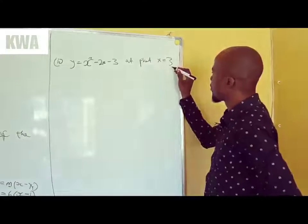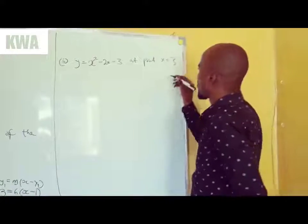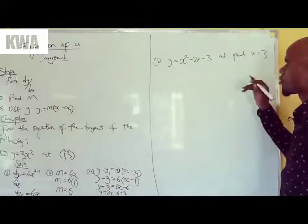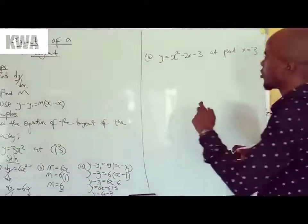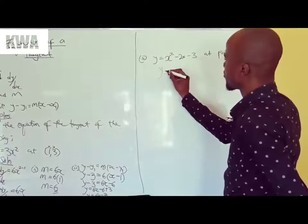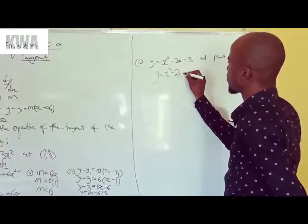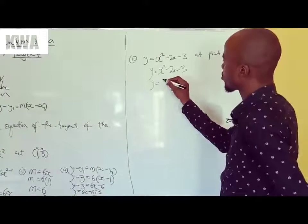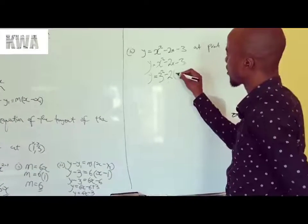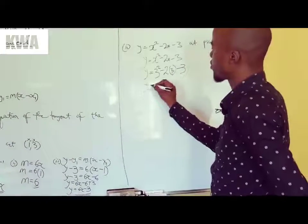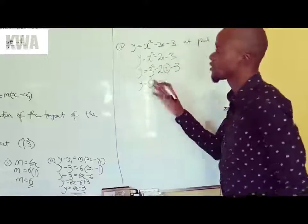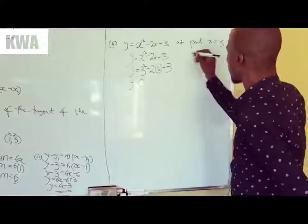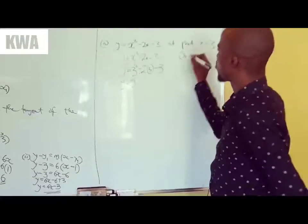So what you are going to do, the difference between this example and the first example is that the first example I have given you the y which is 3. Here I have only been given the x, so you need to find y before you do anything. So you write your equation, x squared minus 2x minus 3. Where there's x you put 3. So y equals 3 squared minus 2 in brackets 3 minus 3. So y equals 0. If you punch this on your calculator, this is a paper 2 question, it will give you 0.